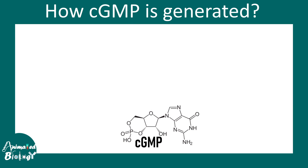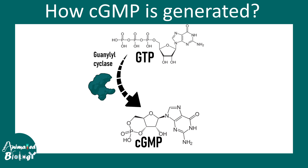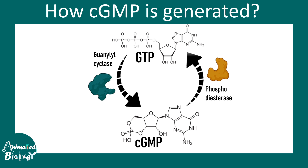Cyclic GMP is an important cell signaling molecule and a second messenger. It is generated from GTP, or guanosine triphosphate, with the help of guanylyl cyclase — similar to how adenylate cyclase converts ATP into cyclic AMP. Cyclic GMP can also be broken down by phosphodiesterase to form GMP.